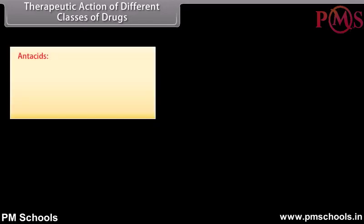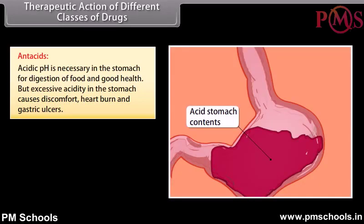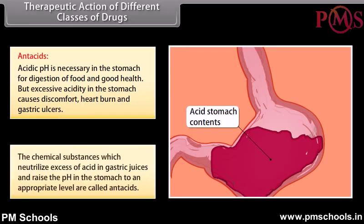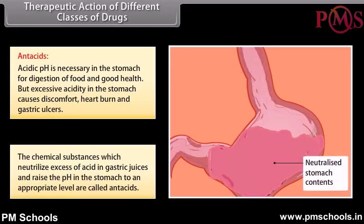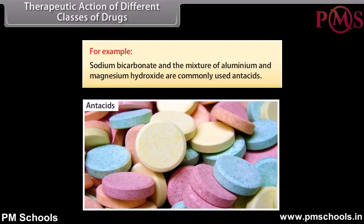Therapeutic action of different classes of drugs: Antacids — Acidic pH is necessary in the stomach for digestion of food and good health, but excessive acidity in the stomach causes discomfort, heartburn, and gastric ulcers. The chemical substances which neutralize excess acid in gastric juices and raise the pH in the stomach to an appropriate level are called antacids. For example, sodium bicarbonate and the mixture of aluminium and magnesium hydroxide are commonly used antacids.